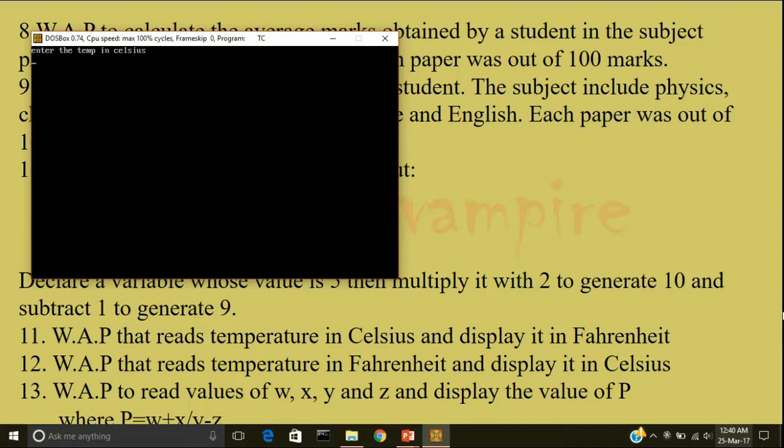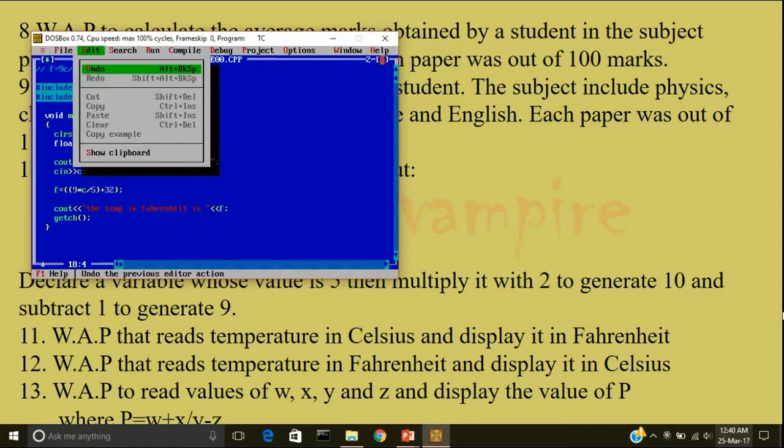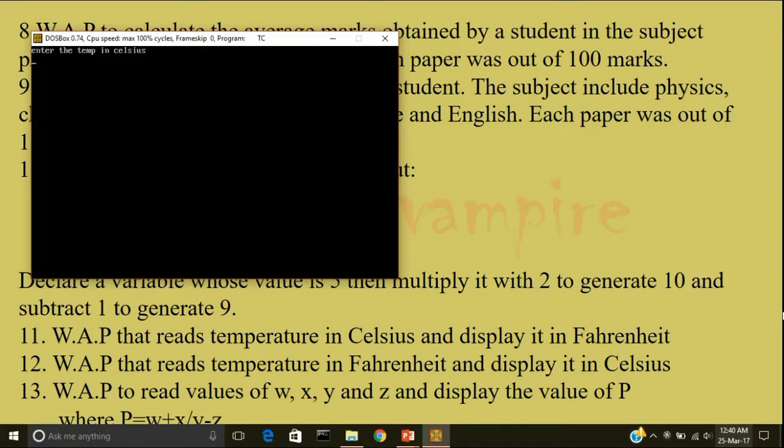Enter the temperature in Celsius. 25. The temperature in Fahrenheit is 77. Let me run the program again. 100 degree Celsius, 212.